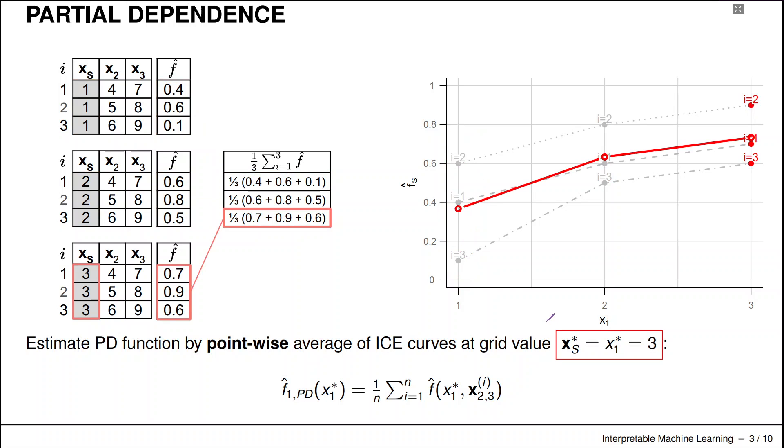And then we can do that for the second point and for the third point. So if we just average point-wise like that through the ICE curves, that gives rise to our partial dependence function. And we usually compute these two things together because next to the PDP curve, we also usually want to visualize the ICE curves.